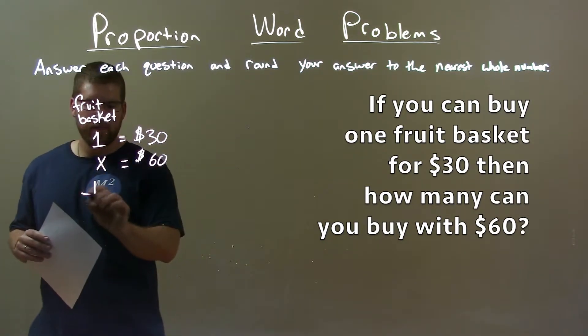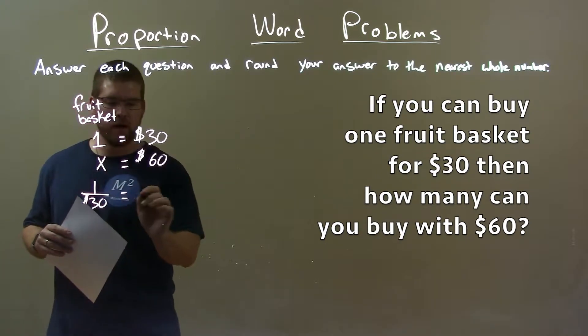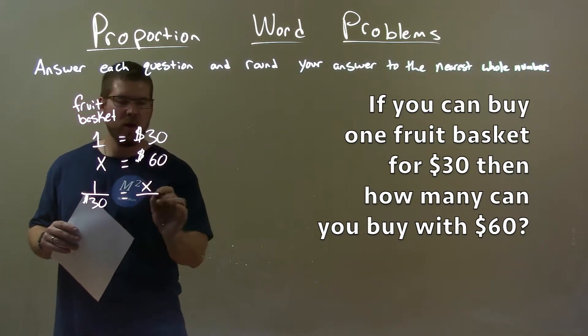Let's set up a proportion. One over 30. One fruit basket for $30 is equal to x fruit baskets over $60.